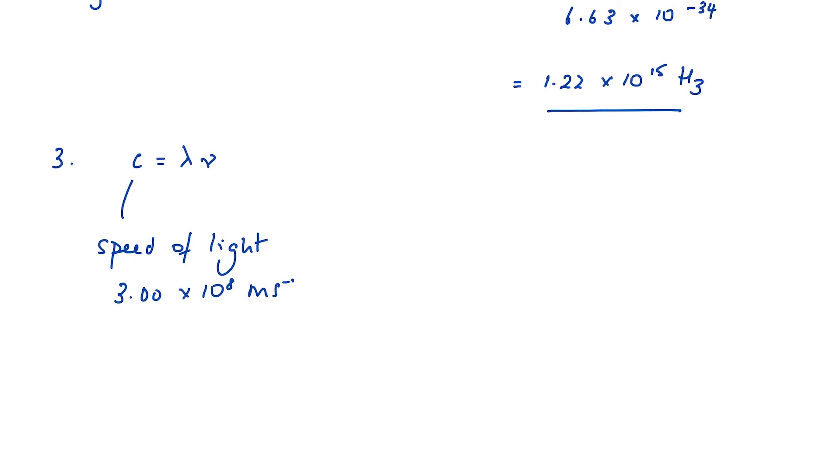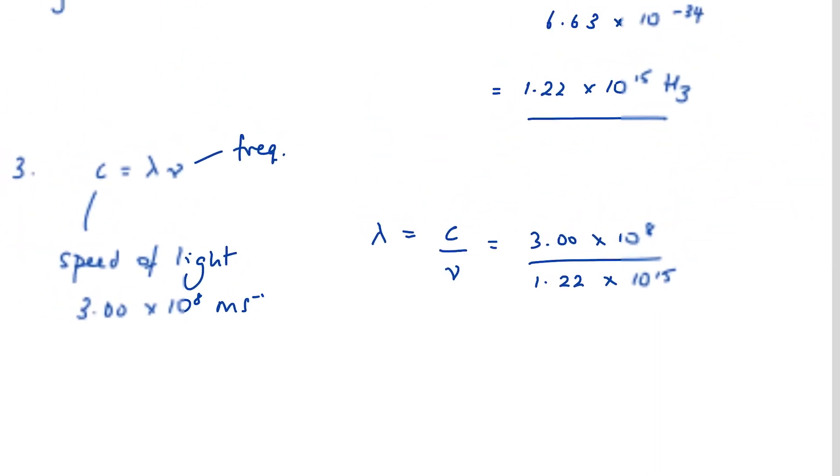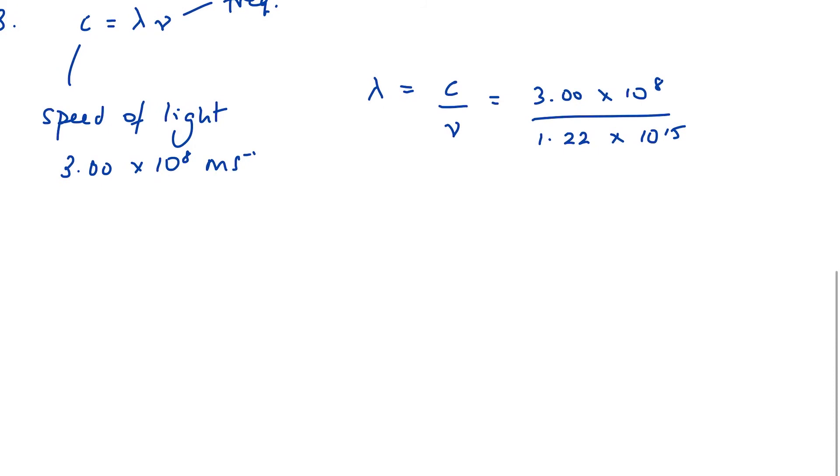So we can rearrange to find the wavelength. Wavelength equals speed of light divided by frequency: 3.0 × 10⁸ divided by 1.22 × 10¹⁵. And when we do that, we are going to have a value of 2.46 × 10⁻⁷.